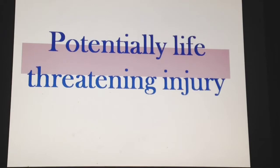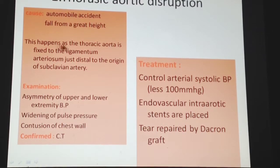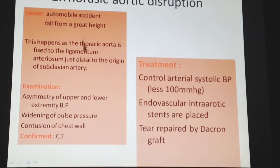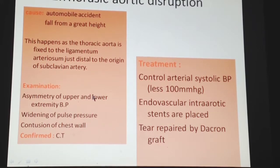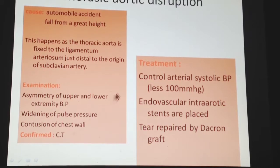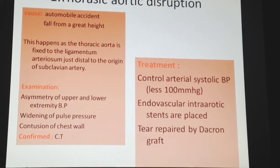Potentially life-threatening injuries include thoracic aortic disruption, caused by automobile accidents or falls from height. The aorta is fixed to the ligamentum arteriosum distal to the origin of the subclavian artery; in these incidents the ligament pulls on itself, disrupting the thoracic aorta. Examination reveals asymmetry of upper and lower extremity blood pressure, widening of pulse pressure, and chest wall contusions. Diagnosis is confirmed by CT scan. Treatment involves controlling arterial systolic blood pressure below 100 mmHg, followed by endovascular intra-aortic stenting and repair of the tear with a Dacron graft.